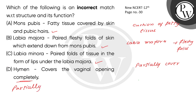What is hymen? Hymen is a thin piece of mucosal tissue which surrounds and partially covers the vaginal opening. So the incorrect option is the one that says hymen covers the vaginal opening completely.